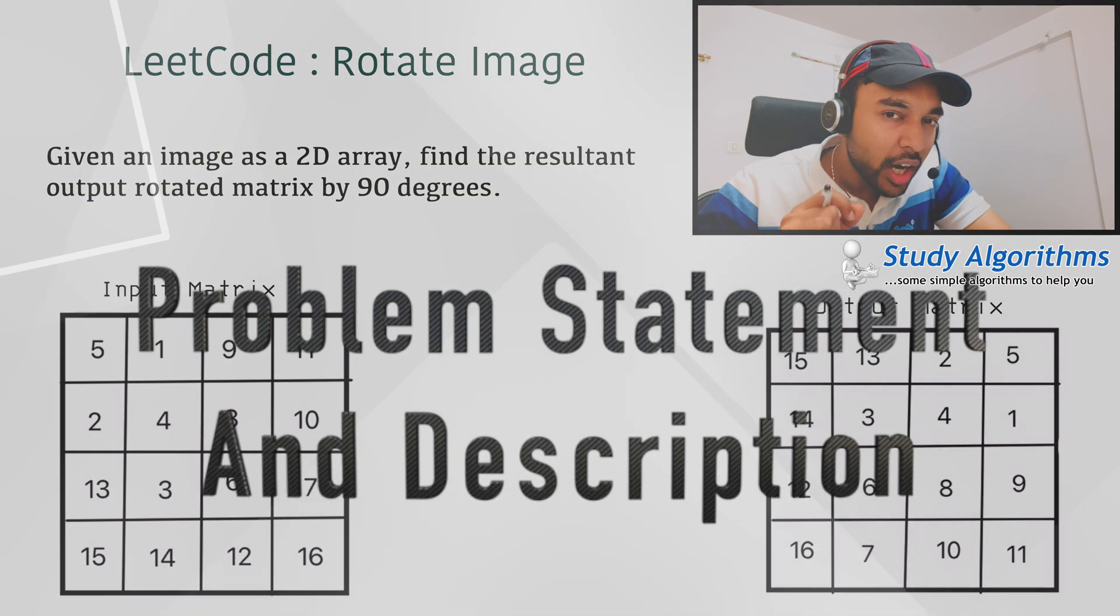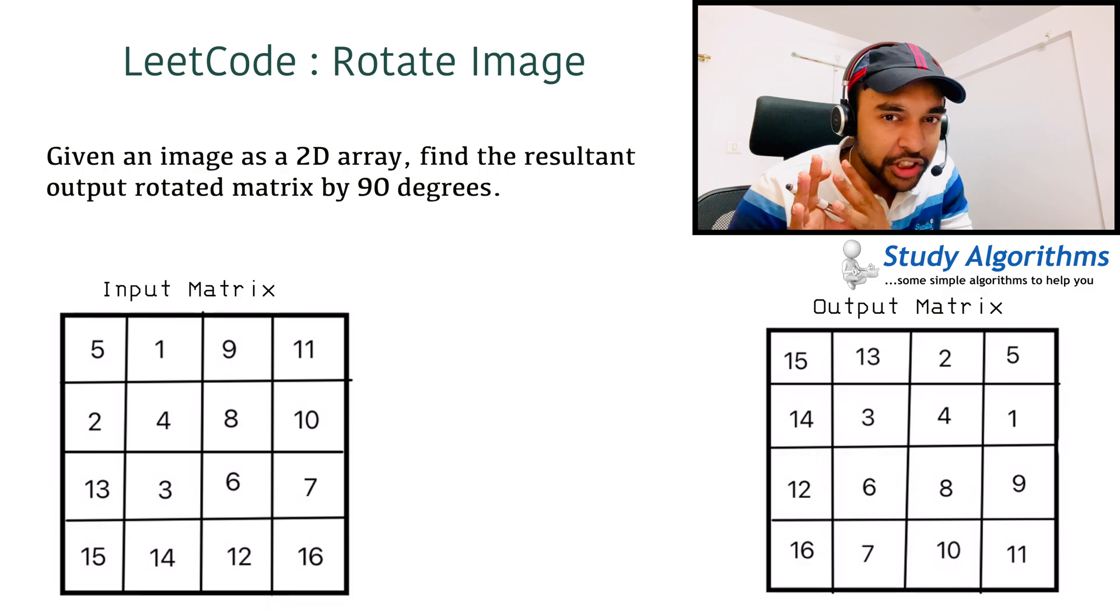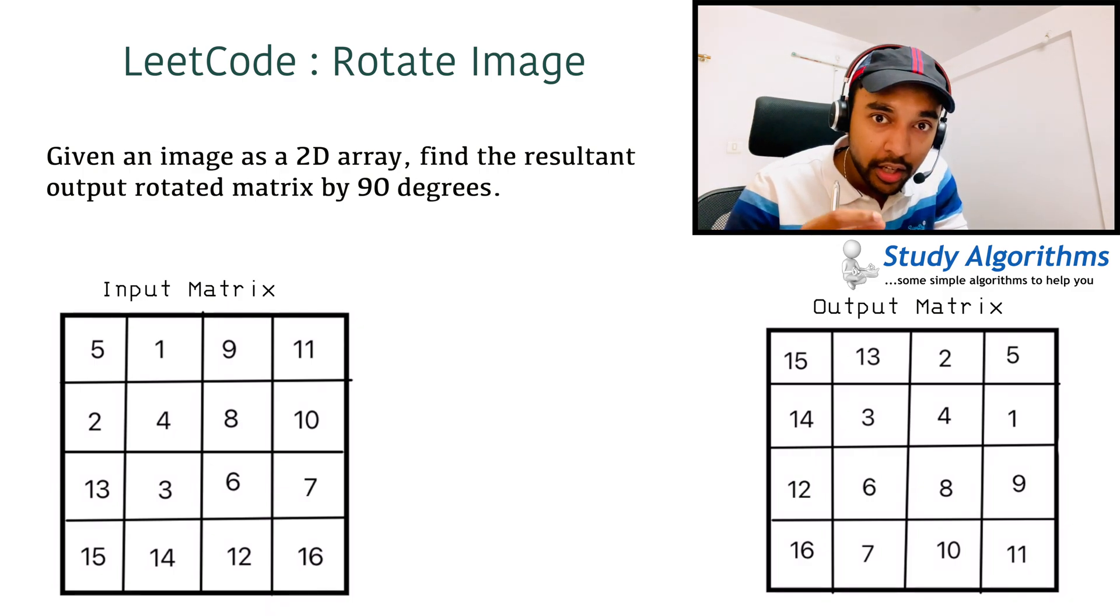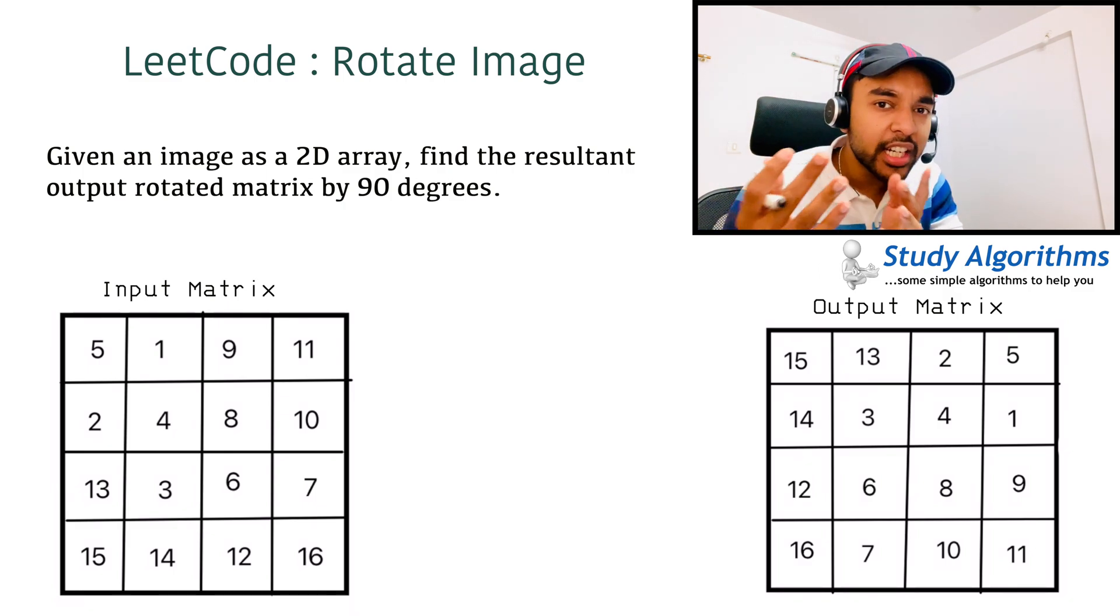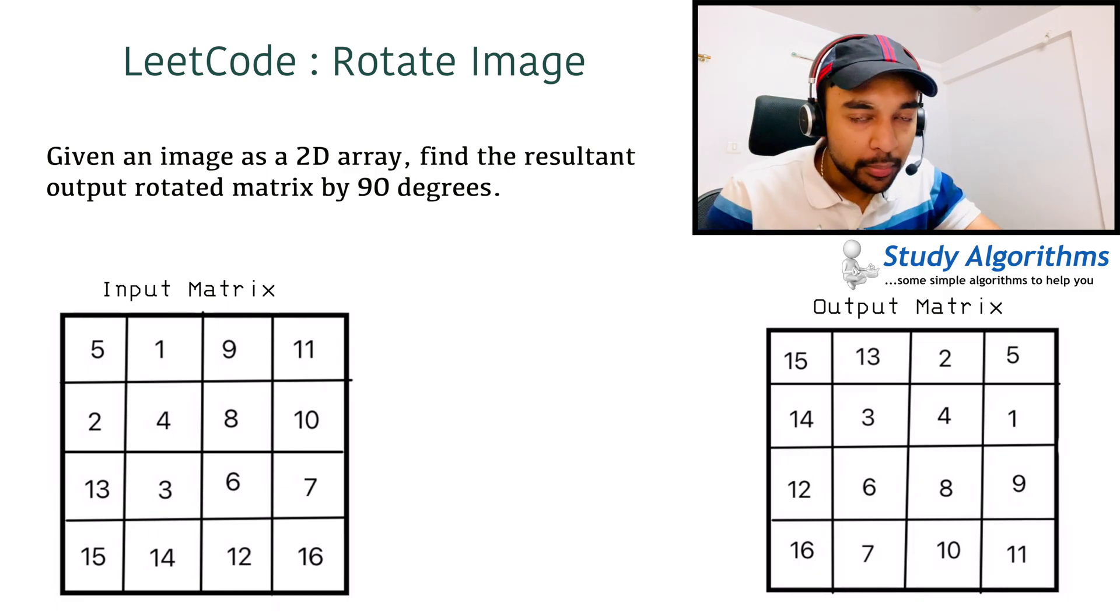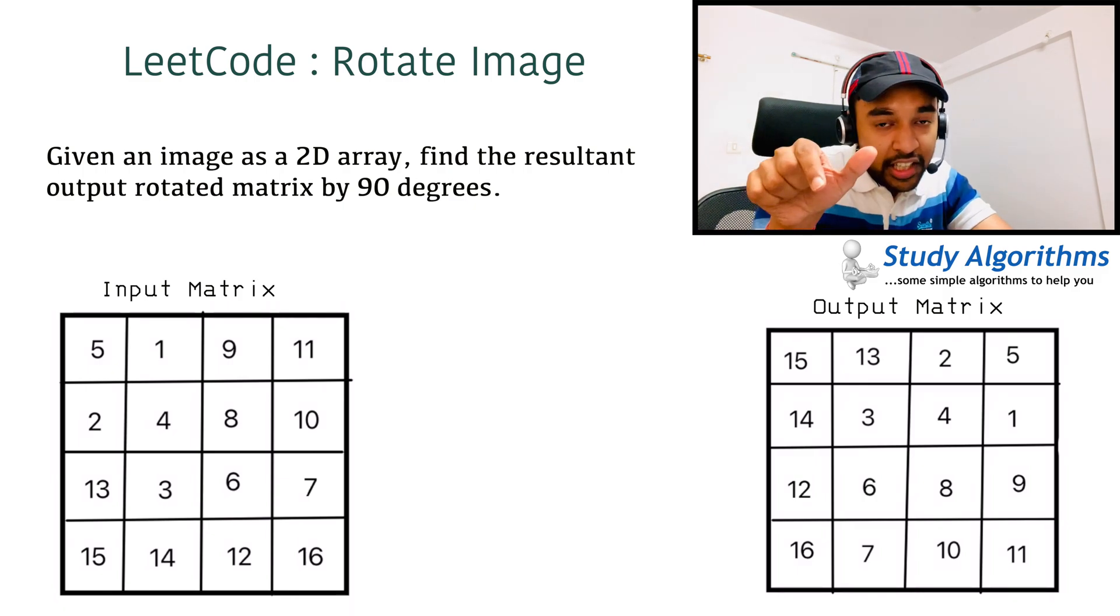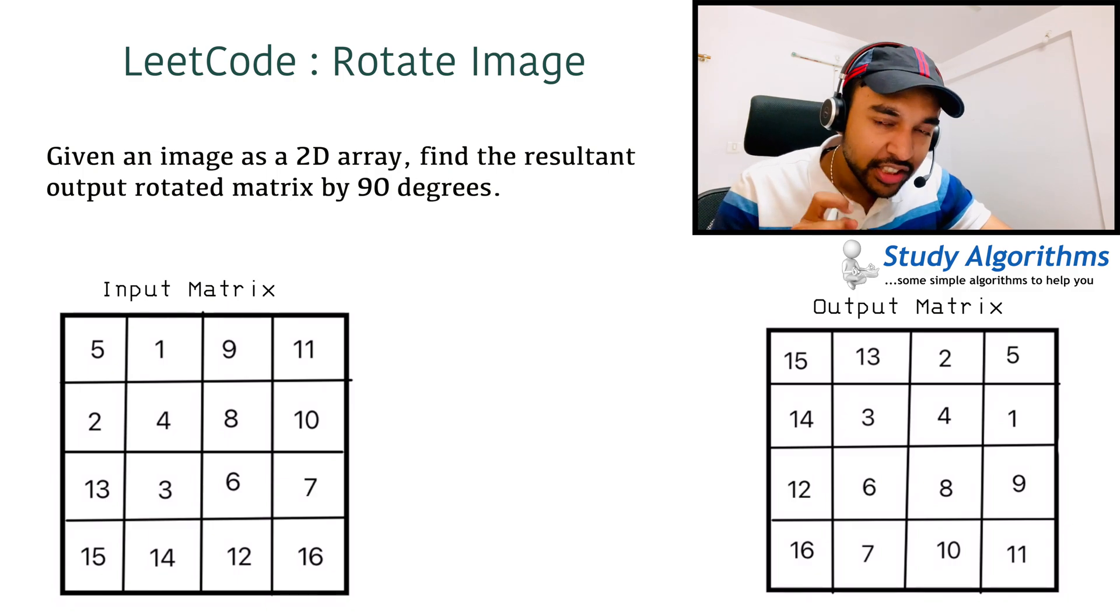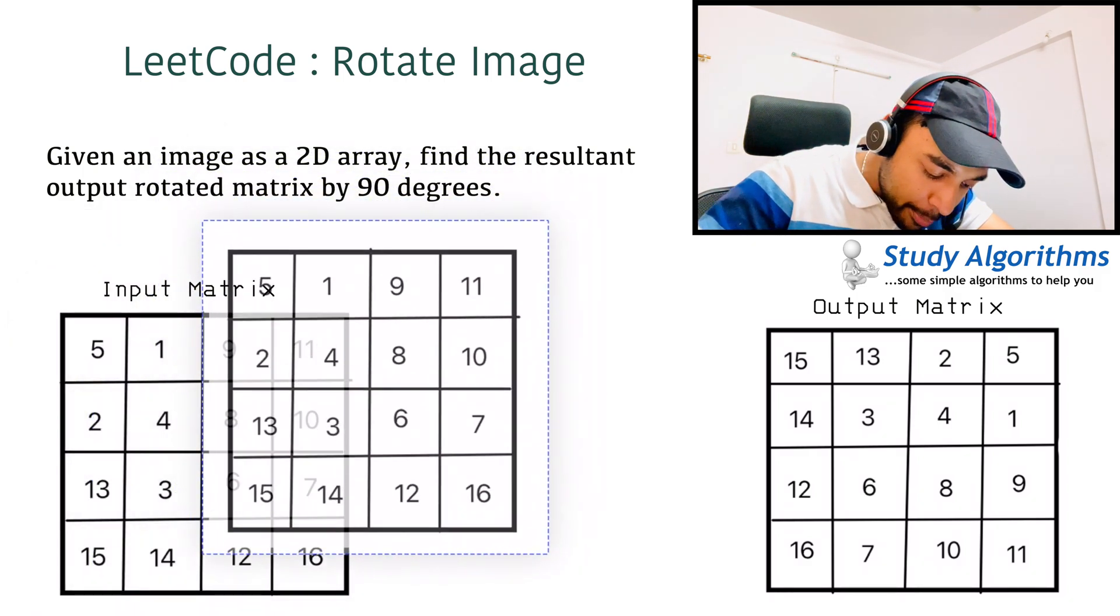The best way to understand any problem is to understand the given sample test case. Now this problem talks about rotating an image. But over here you see that you are given a 2D array or a matrix. So how does this relate to an image? You can think of this matrix as an image. And over here you see the final rotated image.